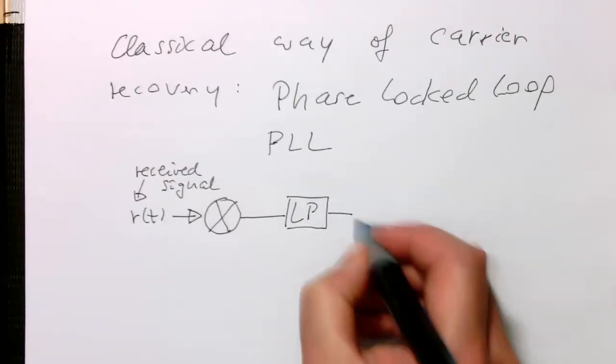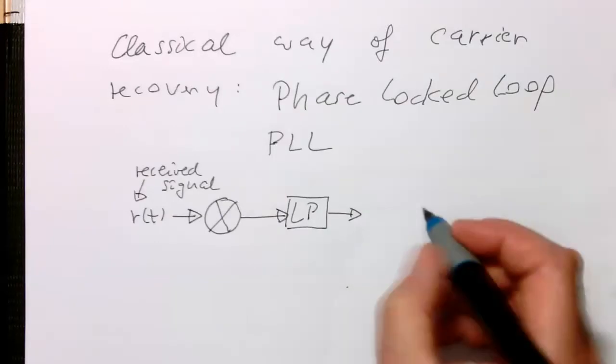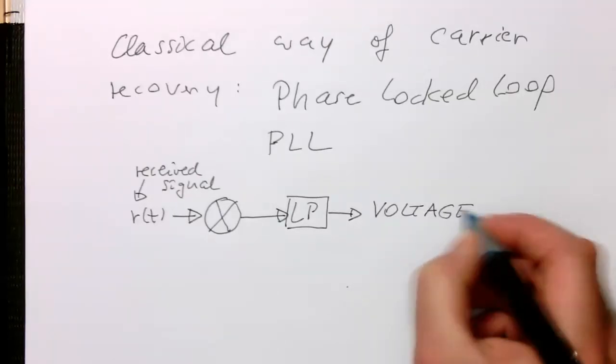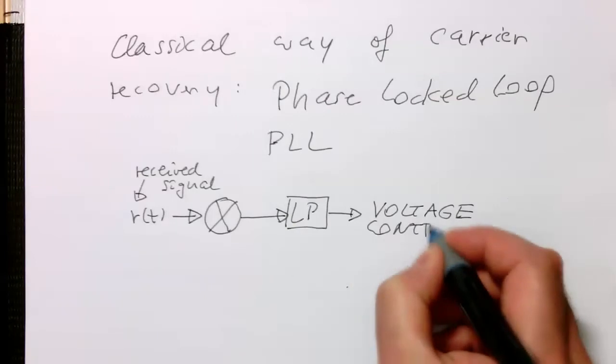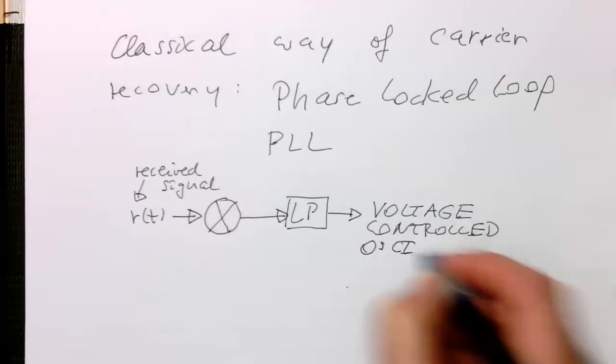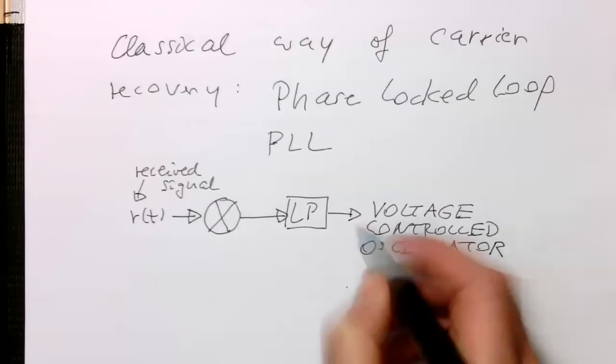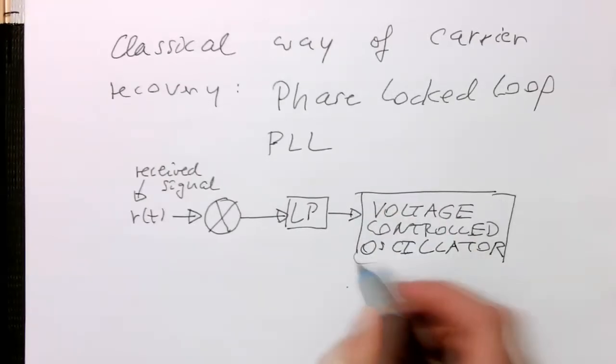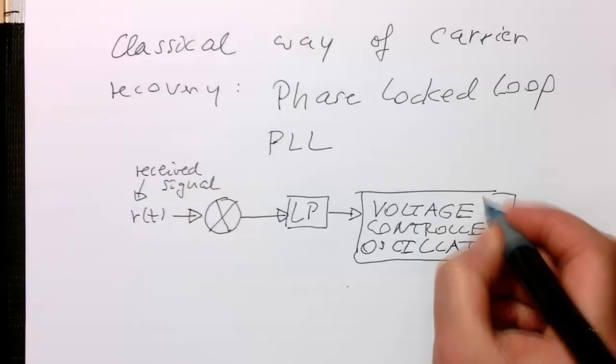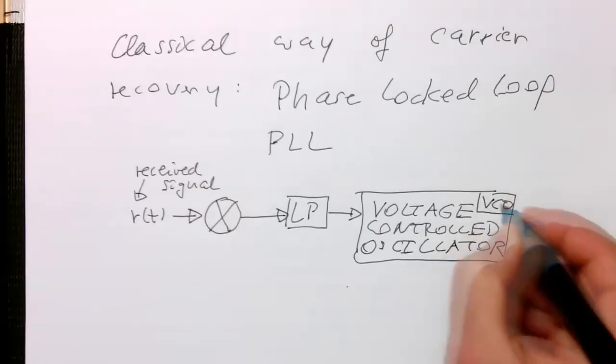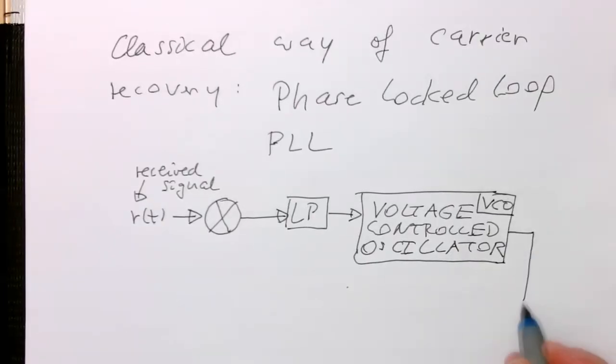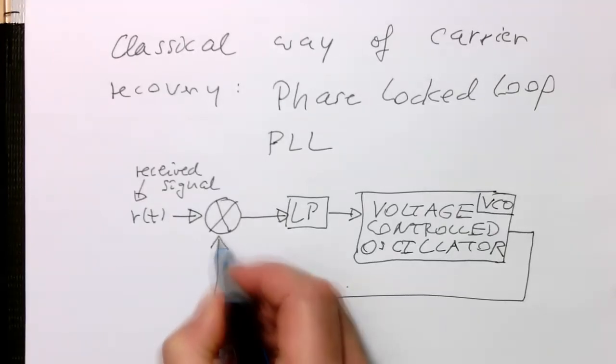This low-pass output is sent into a voltage-controlled oscillator, usually called VCO. The output of the VCO is sent back to the multiplier.